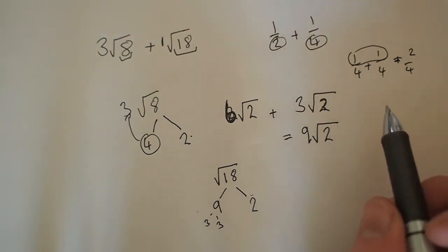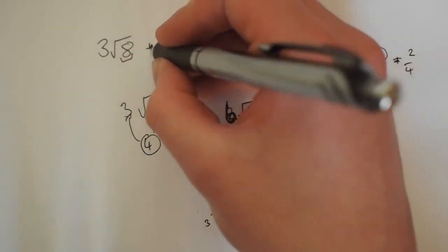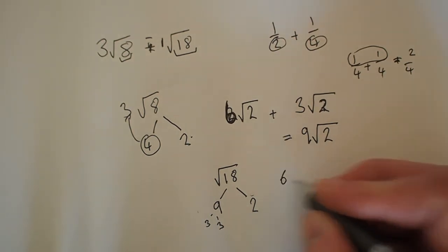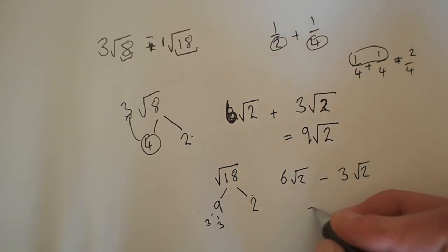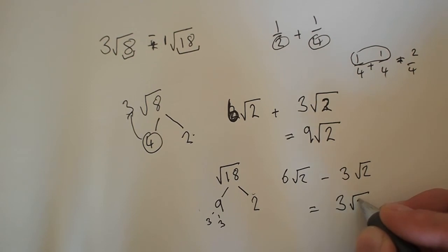So anyway, I'm going to be doing some more examples on how to do this. It's a similar method. Sorry, I should mention subtraction. If we're going to make the subtraction, we'll literally just take it away. So it'll be 6 square root 2 take away 3 square root 2 equals 3 square root 2.